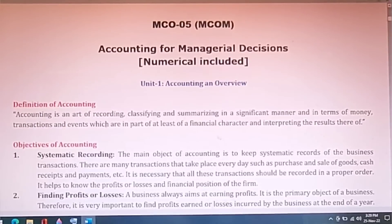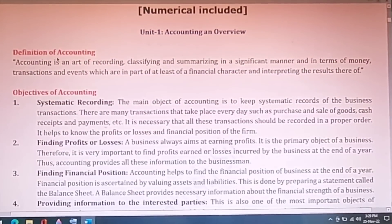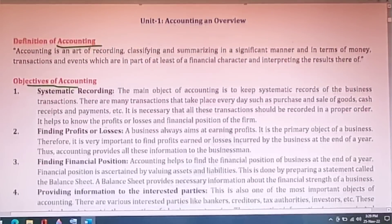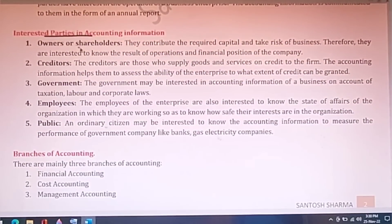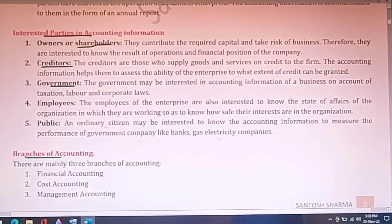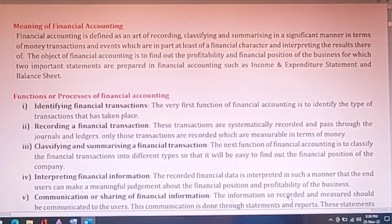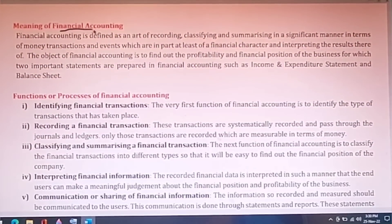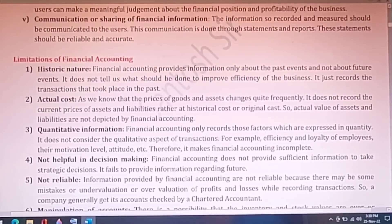For MCO05 theory questions in December, as a commerce student you should know what is accounting, what are the objectives of accounting, and who are the interested parties in accounting — like owners, shareholders, creditors, government, and all stakeholders. Questions sometimes come from these topics and also from different types of branches of accounting, main functions, and limitations of financial accounting.